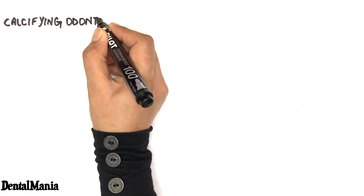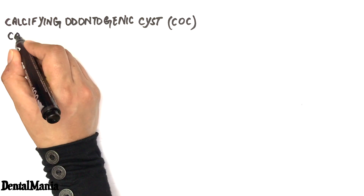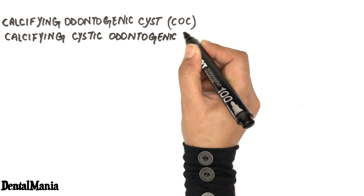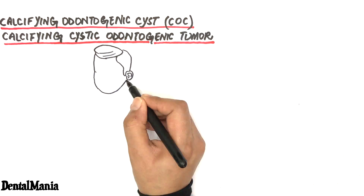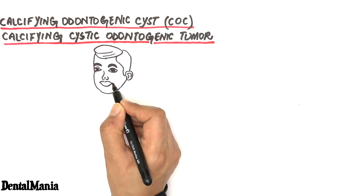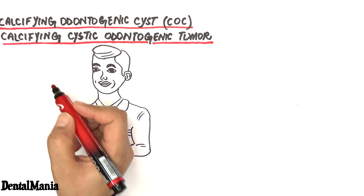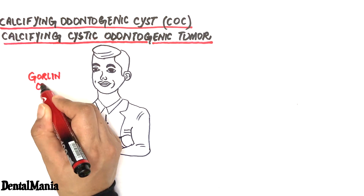The calcifying odontogenic cyst, also called calcifying cystic odontogenic tumor, was first described by Gorlin in the year 1962, hence given the name Gorlin cyst.